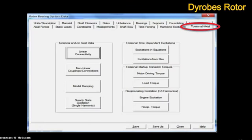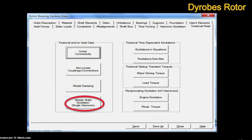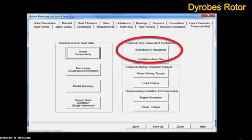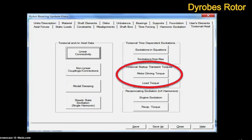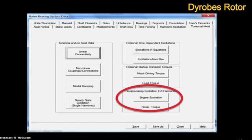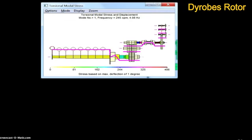In the torsional axial menu, you have several general options to choose from. You can input linear connectivity, nonlinear couplings and connections, modal damping factors, steady state excitation, time-dependent excitations, startup transient analysis, and you can model torque in reciprocating gas or diesel engines.